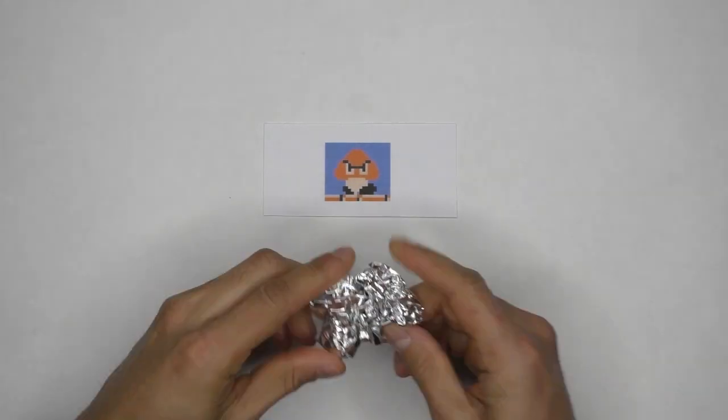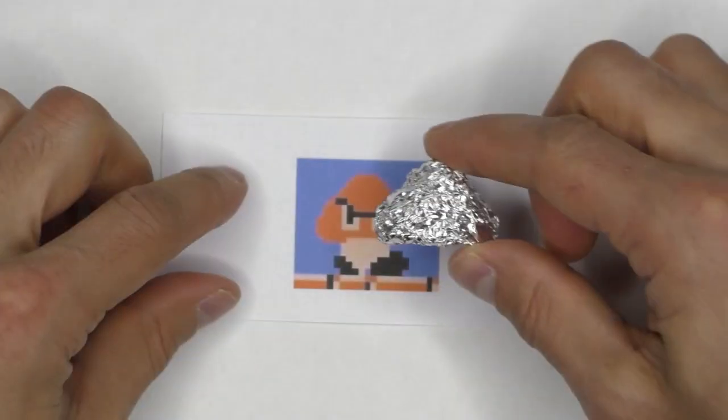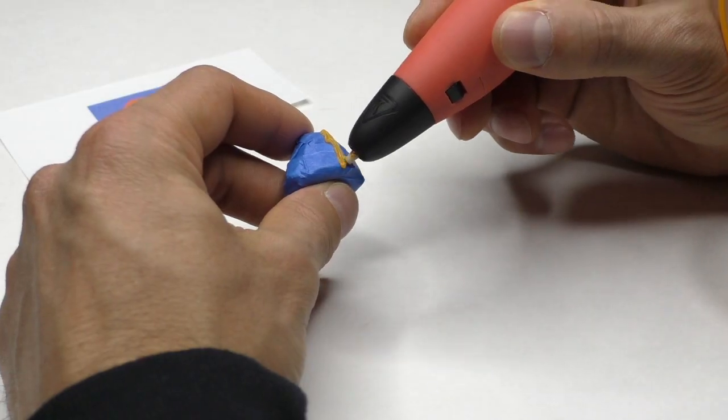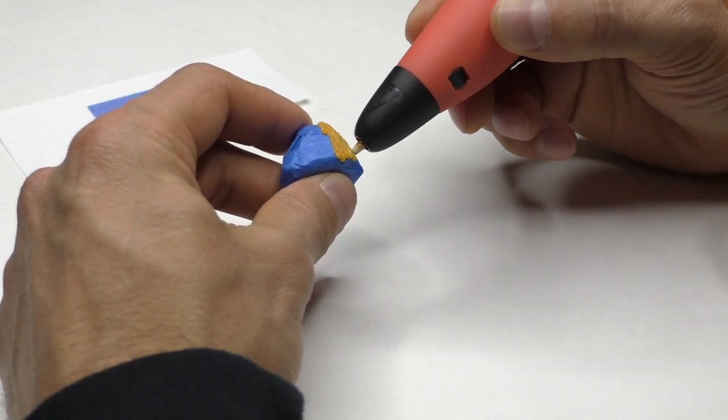To start off the hat we begin with our old nemesis, the Goomba. I start with aluminum foil molded into the right shape and covered with blue painters tape to make the filament stick.